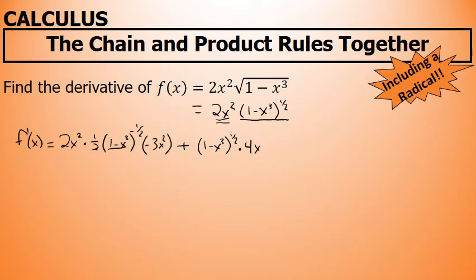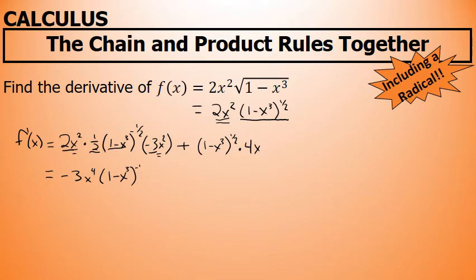So we have a derivative, but it is not cleaned up. We're going to first multiply 2 times one-half times negative 3 to get negative 3. We'll also multiply x² times x² to get x⁴, along with (1 minus x³)^(-1/2) to complete the first term. In the second term, we rewrite it with 4x in front of (1 minus x³)^(1/2).